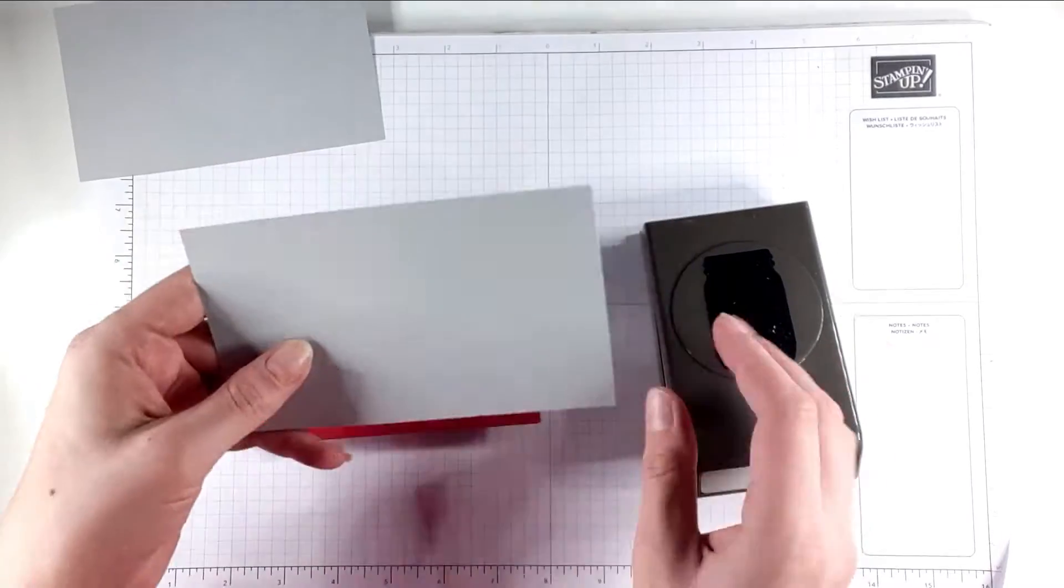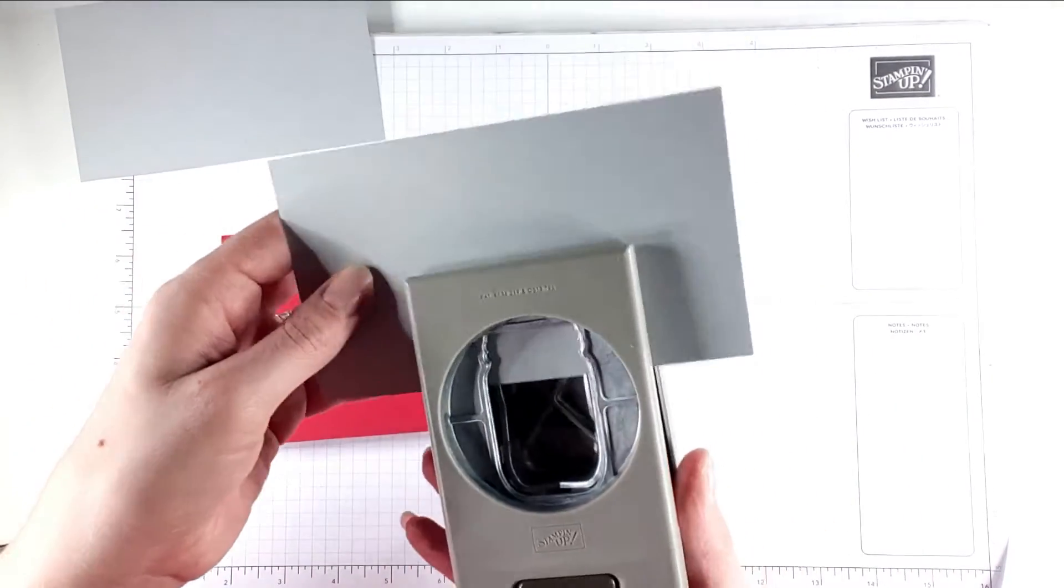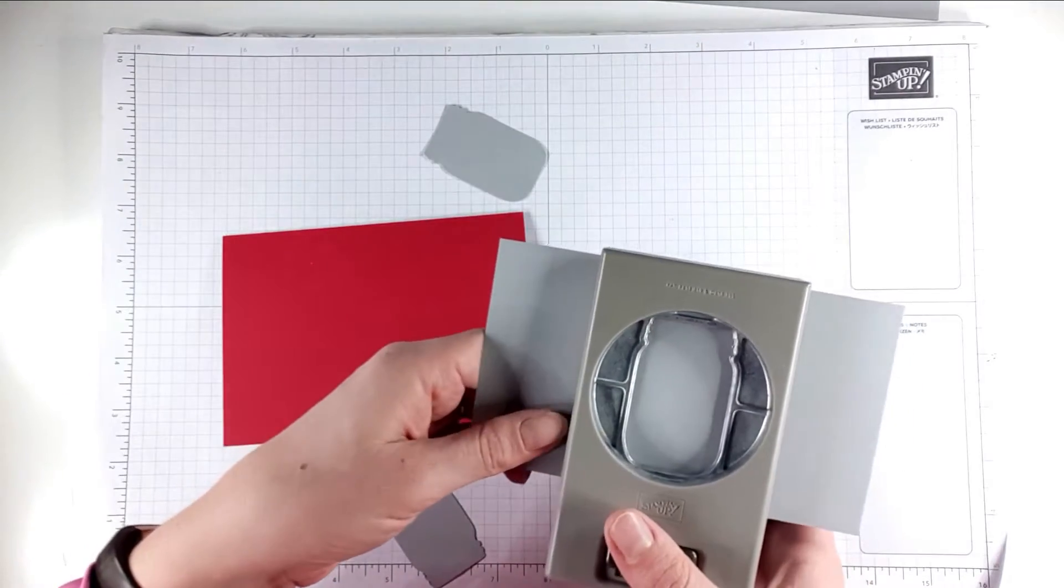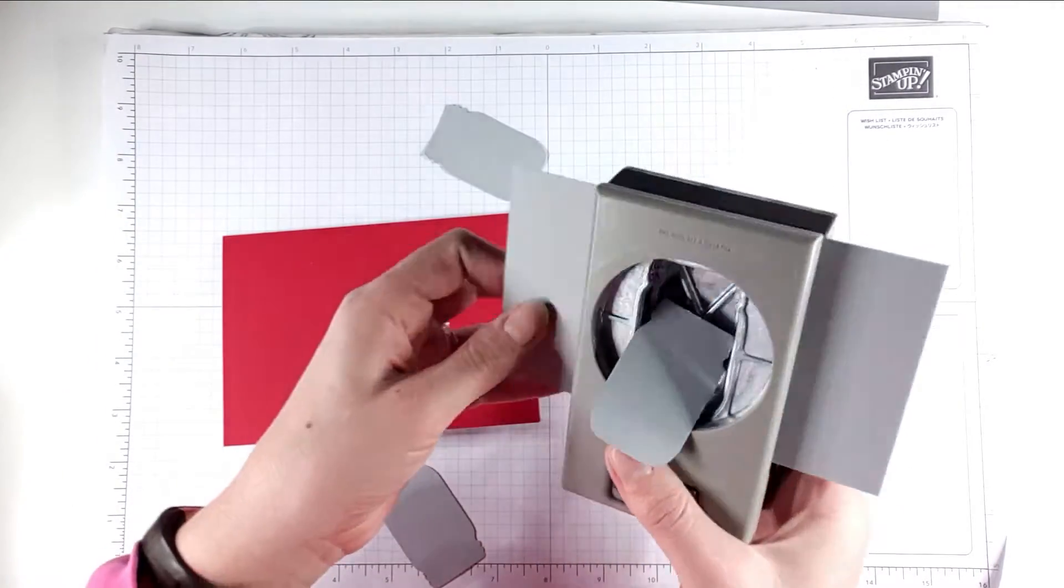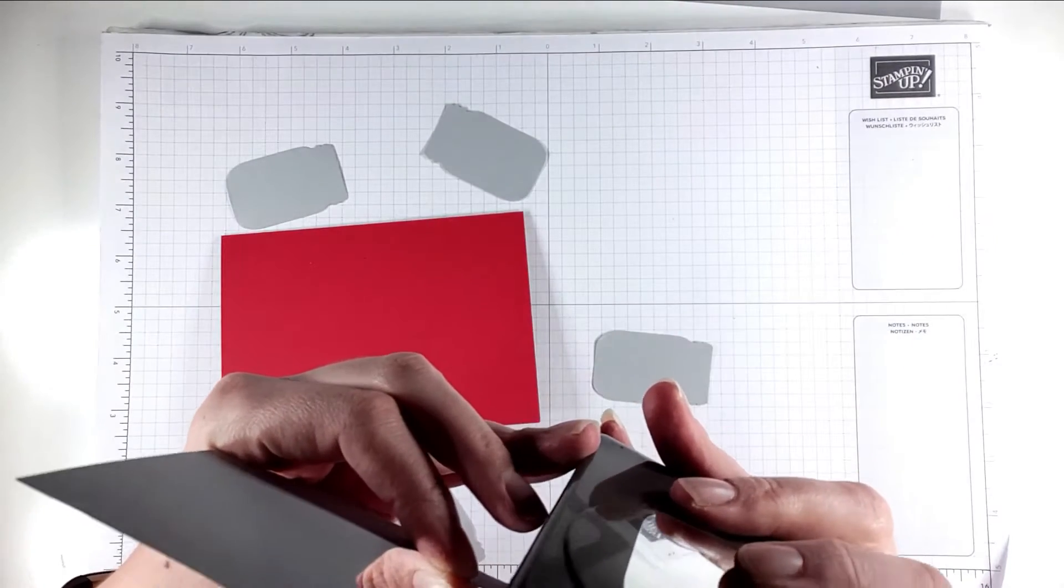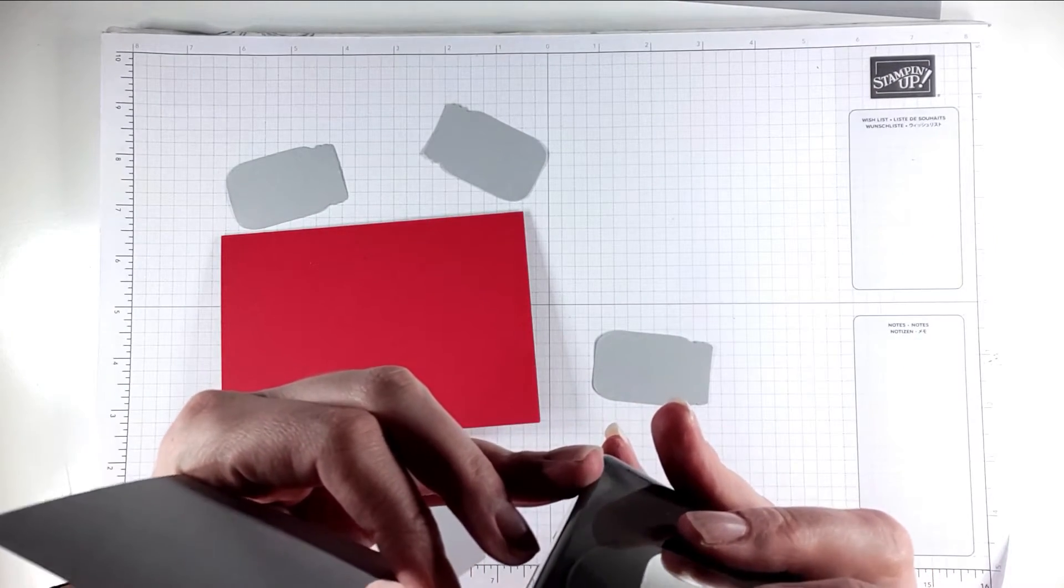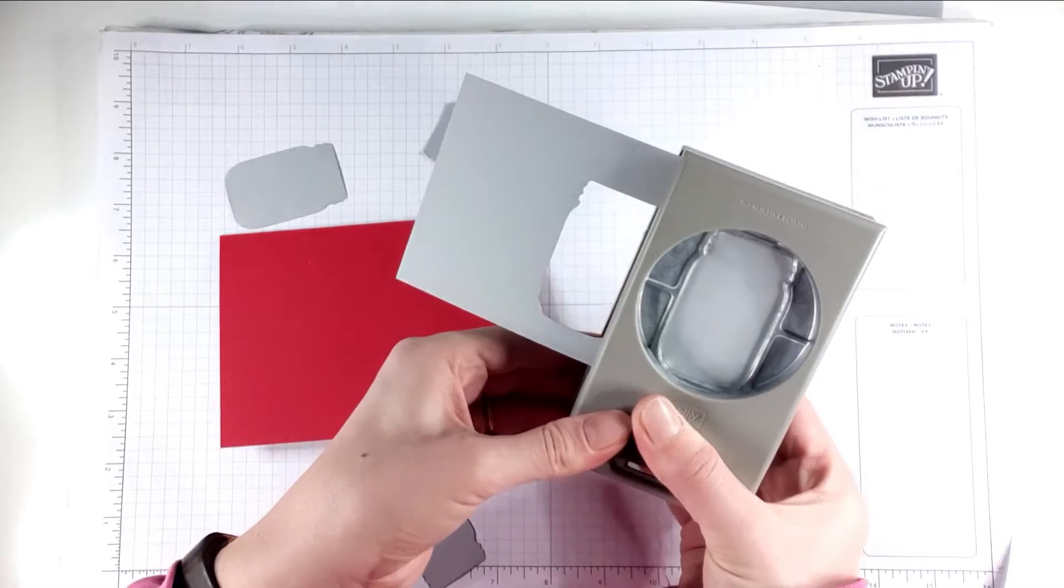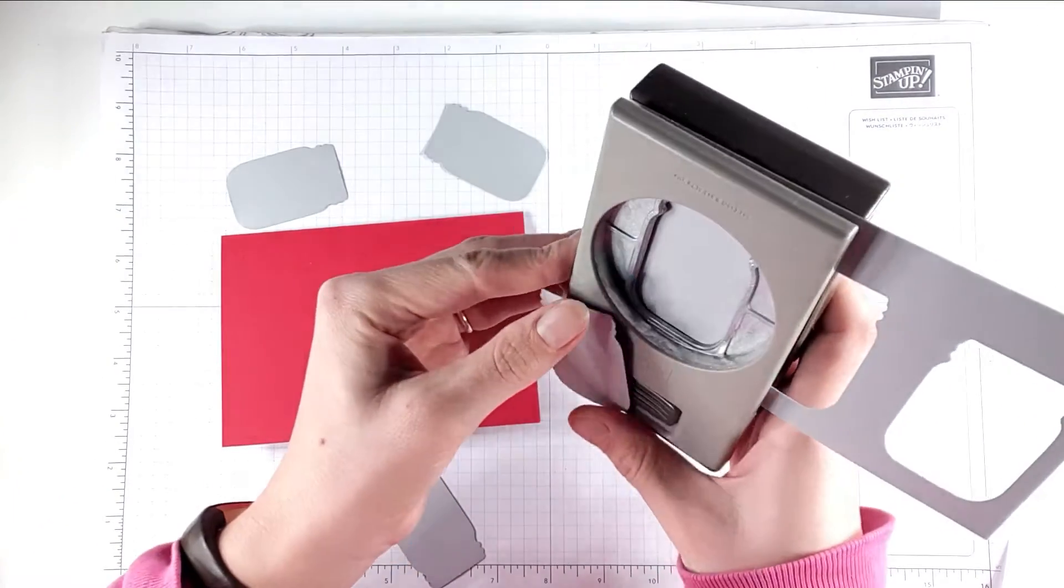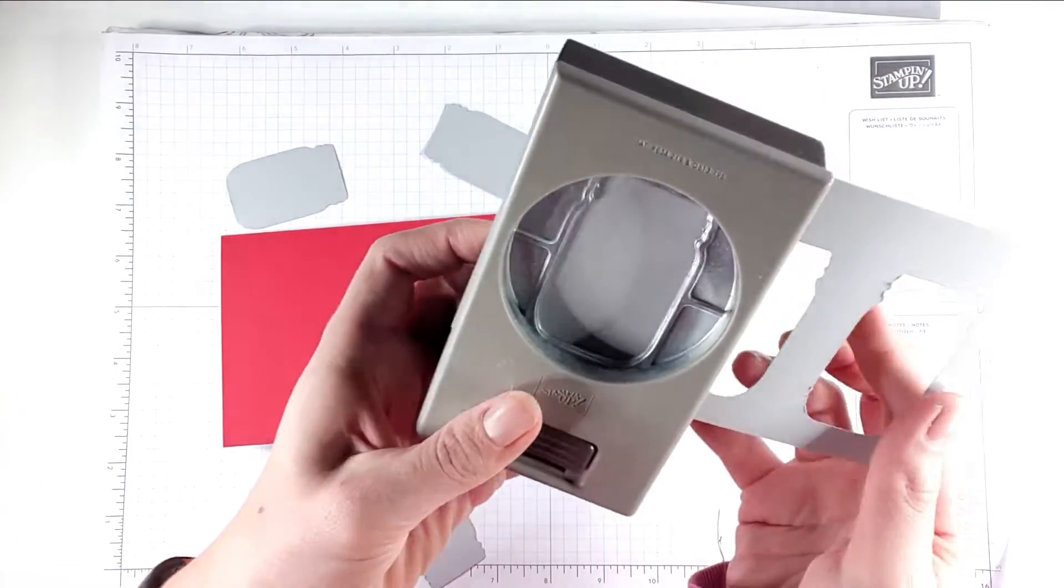On just one of the pieces I'm going to punch three jars. So I'm going to punch one in the middle, and then I'm going to punch one close to this edge and then one close to the other edge.